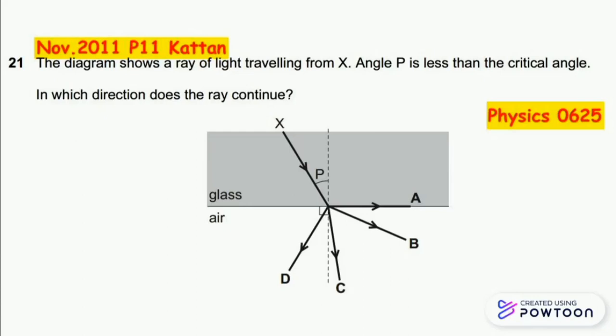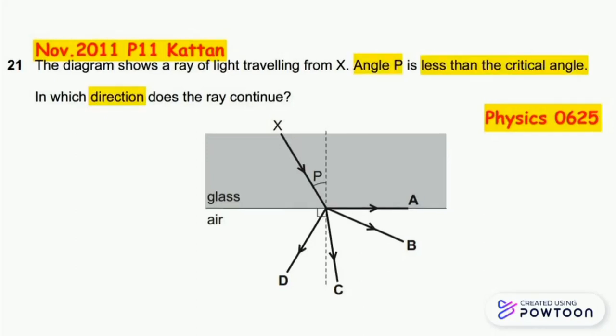We highlight three keywords: angle P, less than the critical angle, and direction. The incident ray made an angle of incidence P with the dotted line, the normal, inside the glass which is the denser medium.